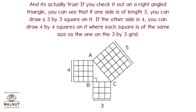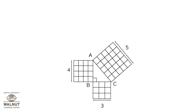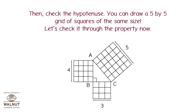And it's actually true. If you check it out on a right-angled triangle, you can see that if one side is of length 3, you can draw a 3 by 3 square on it. If the other side is 4, you can draw a 4 by 4 square on it, where each square is of the same size. Then check the hypotenuse — you can draw a 5 by 5 grid of squares of the same size.